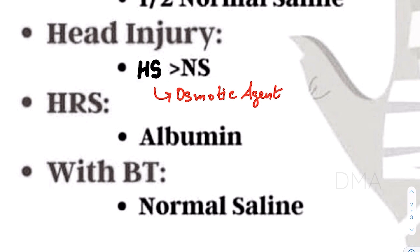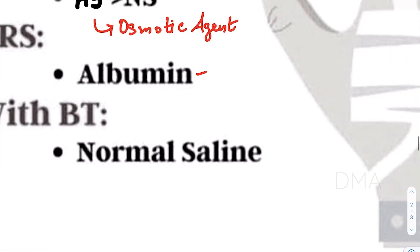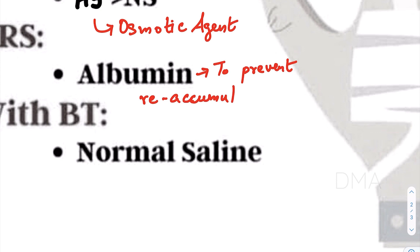For hepatorenal syndrome (HRS) patients, there is usually low serum albumin and ascites, so we perform paracentesis. Simultaneously, we also infuse albumin. Albumin prevents the reaccumulation of ascitic fluid after paracentesis and also ensures good blood circulation to both the liver and kidney. So albumin is the fluid of choice for hepatorenal syndrome patients.